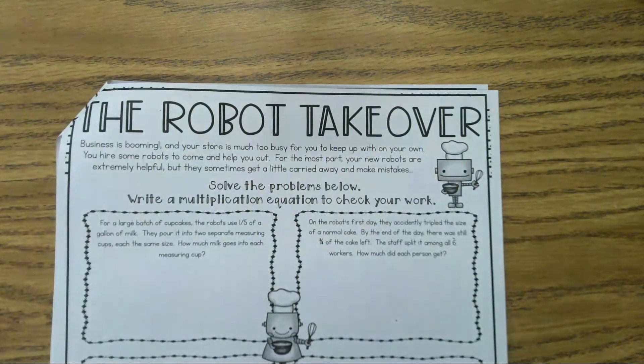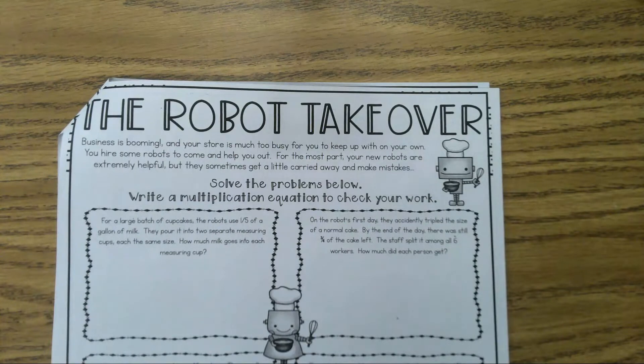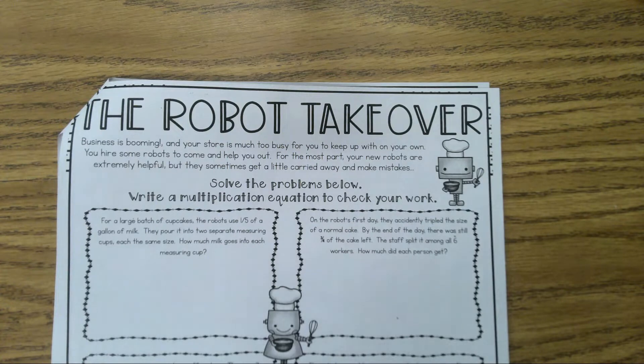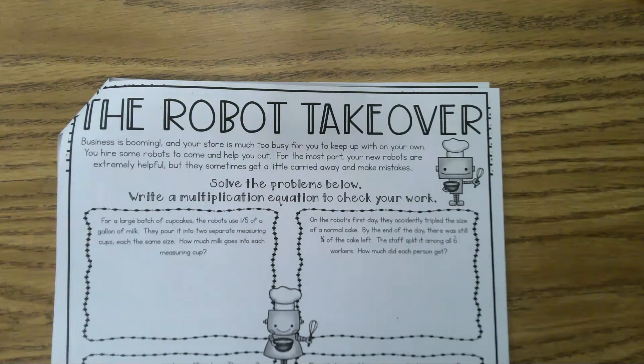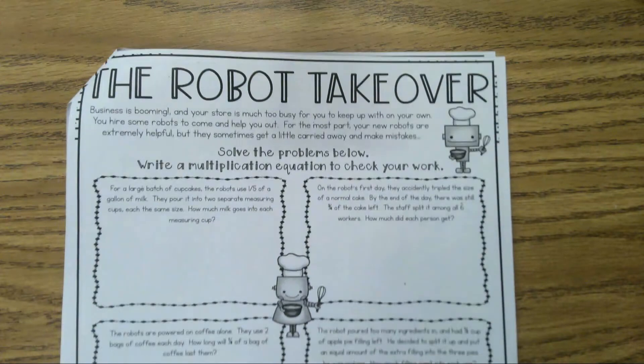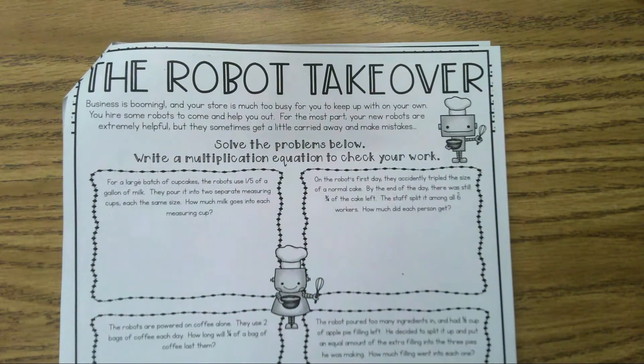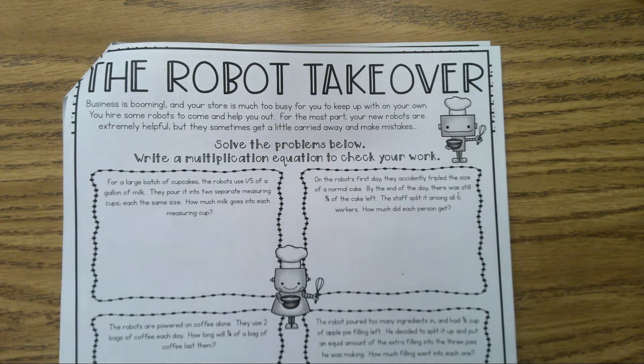Let's go on to the next one. The only one I thought that really was ridiculous was this one about the cupcakes, cutting them up into 16 pieces. All the others I thought were pretty good. Now we're going to talk about the robot takeover. Business is booming, and your store is much too busy for you to keep up on your own. So what do you do? You hire some robots to come and help you out. Your new robots are extremely helpful, but they sometimes get a little carried away and make mistakes. Solve the problems below. Write a multiplication equation to check your work.